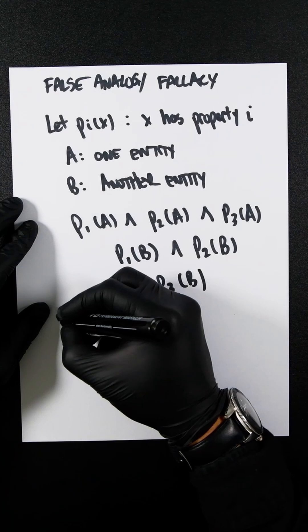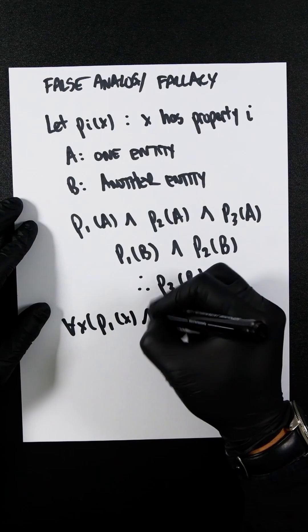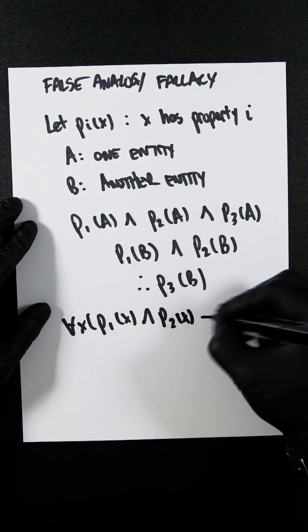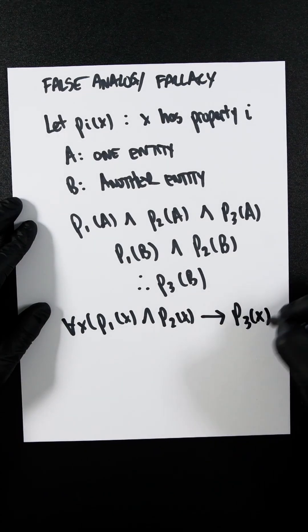So the error is: for all X, P1(X) and P2(X) - this is the if-then sign - implies P3(X).